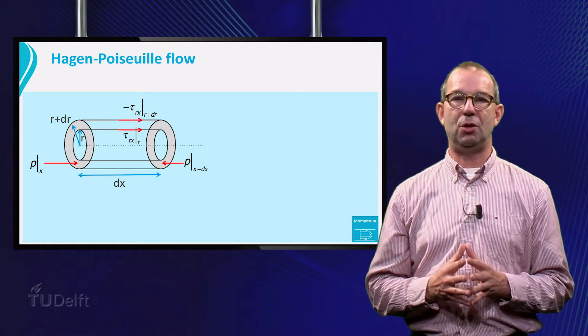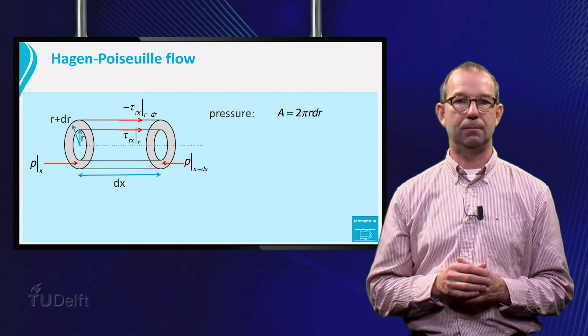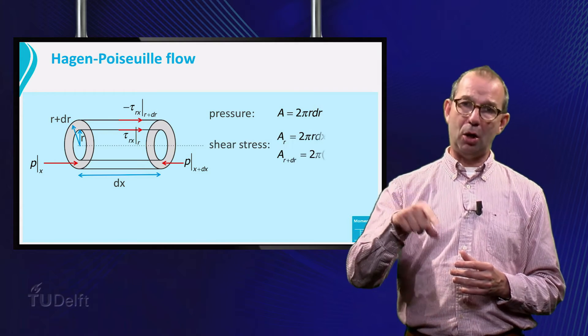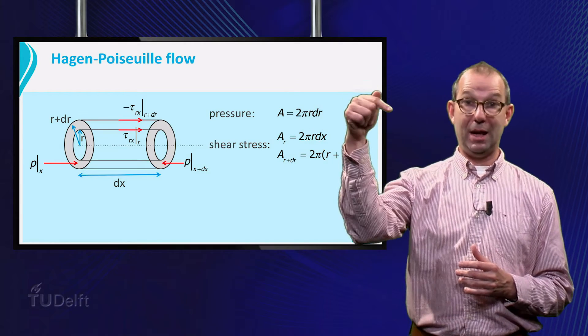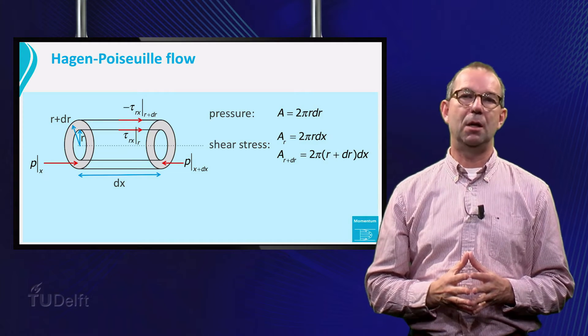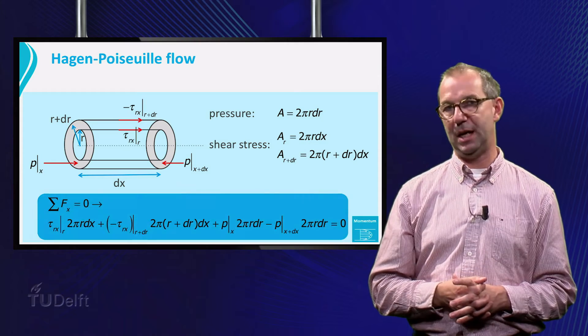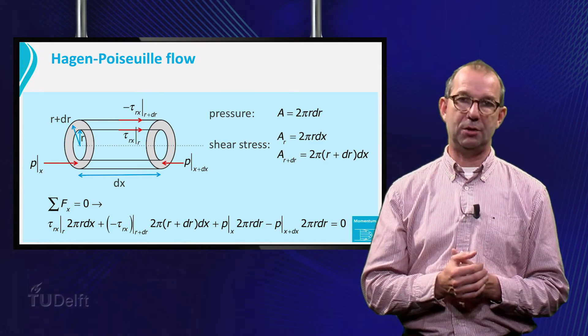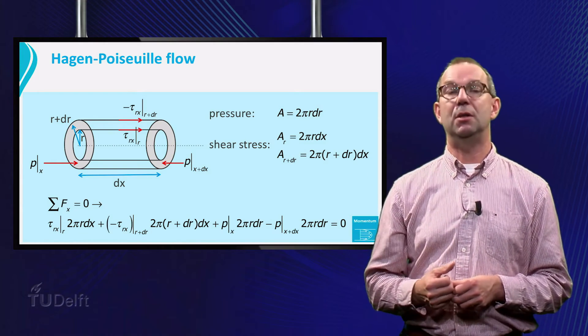The pressure works on the grey rings. They have areas 2 pi r dr. For the shear stress, we need to make a distinction. At r the area is 2 pi r dx, while at r plus dr it is 2 pi r plus dr dx. Thus we get a force balance, tau at r times 2 pi r dx, plus minus tau at r plus dr times its corresponding area plus the two pressure forces is zero.